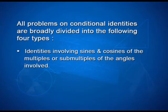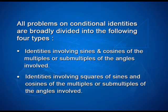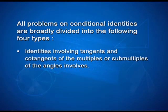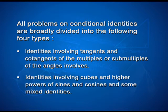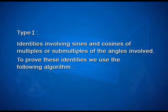All problems on conditional identities are broadly divided into four types. Type 1: identities involving sines and cosines of multiples or submultiples of the angles involved. Type 2: identities involving squares of sines and cosines. Type 3: identities involving tangents and cotangents. Type 4: identities involving cubes and higher powers of sines and cosines, and some mixed identities. We shall now discuss these types one by one, starting with Type 1.